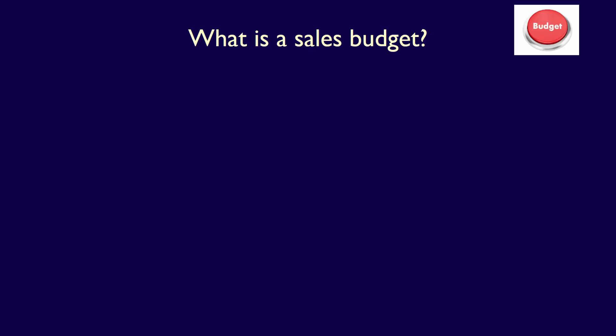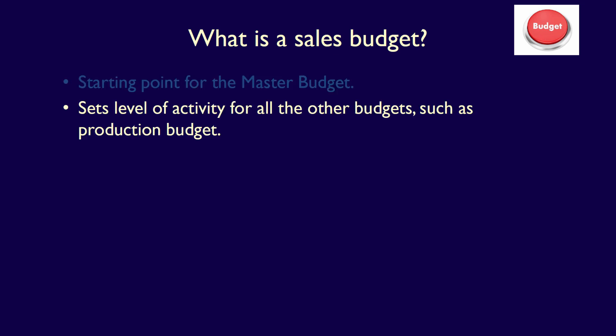In this video, we'll produce a sales budget. What is a sales budget? In the master budget, the first operating budget is the sales budget. The sales budget is important because it's used as the basis for subsequent operating budgets, such as the production budget. In fact, it's used to produce all of the other budgets.